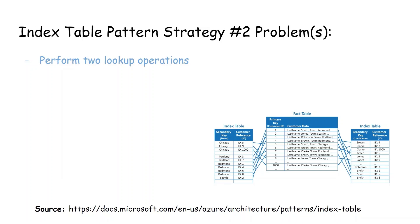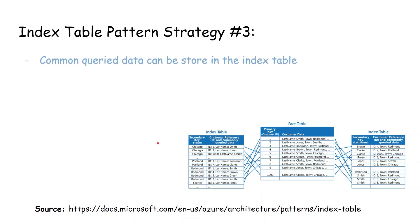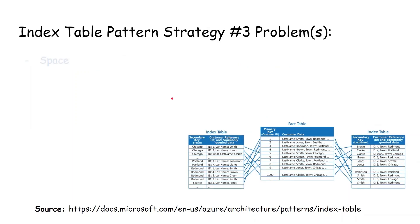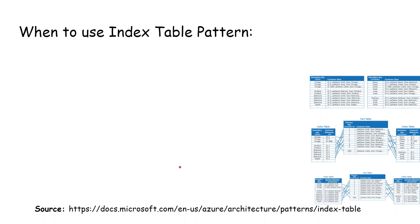Strategy two is better than strategy one since we avoid storing many duplicate tables, but can we do better? In strategy three, we still use an index table storing the secondary key and the customer ID reference to the fact table, but we also store commonly queried data directly in the index table. So we have our secondary key, our primary key pointing to the fact table, and additionally the commonly queried fields like last name or location. If we need data not in the index table, we retrieve it from the fact table. The downside is additional storage space and the need to maintain those fields in both the index table and the fact table.